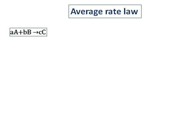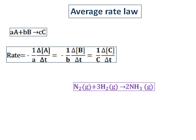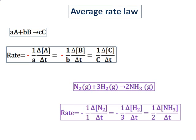From the previous video, for a reaction aA plus bB giving you cC, the average rate can be represented as shown. An example for nitrogen and hydrogen giving you ammonia is also shown. In the case of the average rate law, the rate has to be divided by the stoichiometry of the equation.